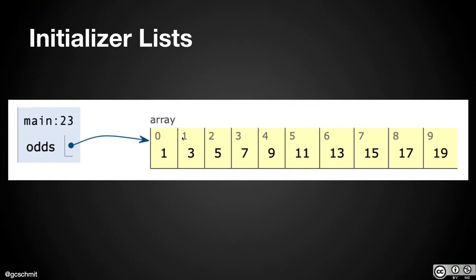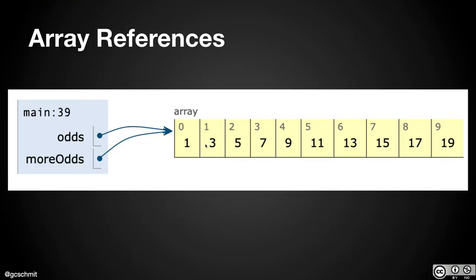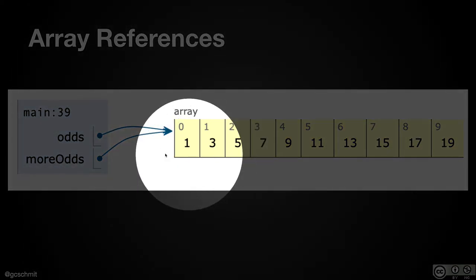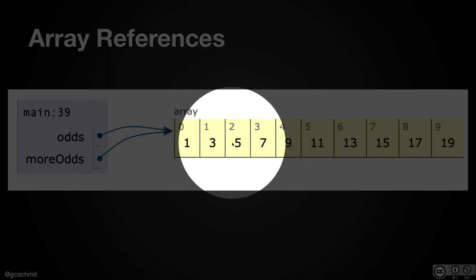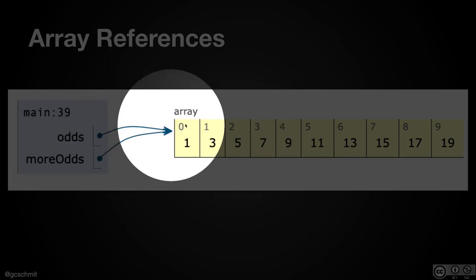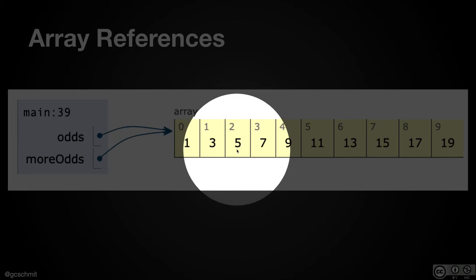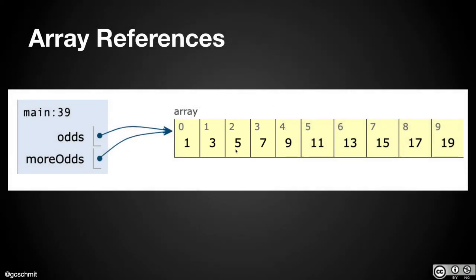Here's what it looks like visually. We have the variable 'odds' whose value is a reference to this chunk of memory with values 1, 3, 5, 7, 9, 11, and so on. We have another variable 'moreOdds' — its Post-it note holds a reference to the same exact array with exactly the same values. So whether we use 'odds' or 'moreOdds' to get to the element at index 2, it's the same array.